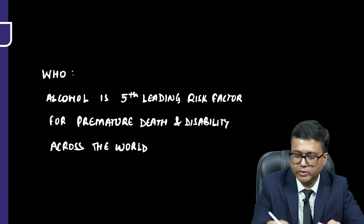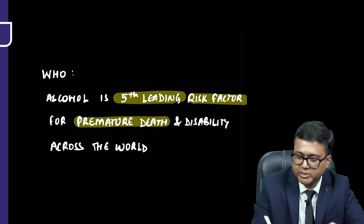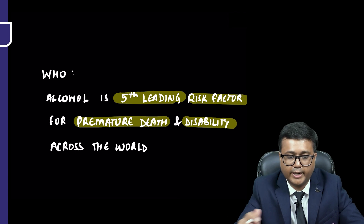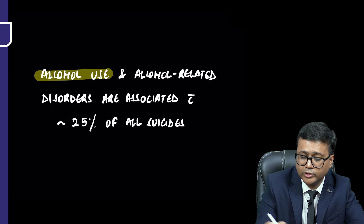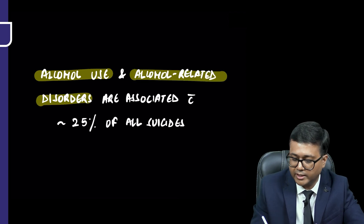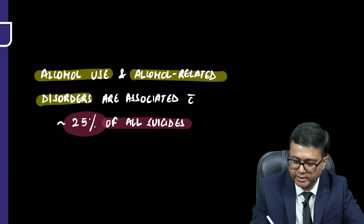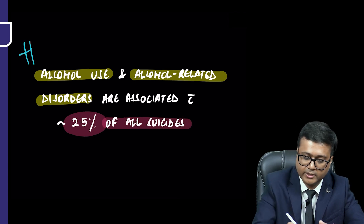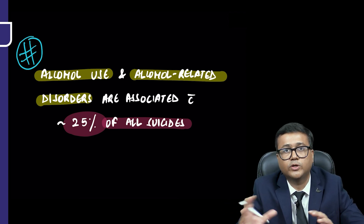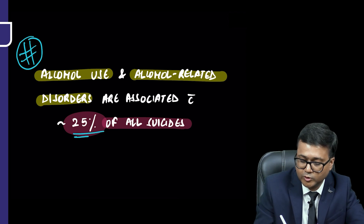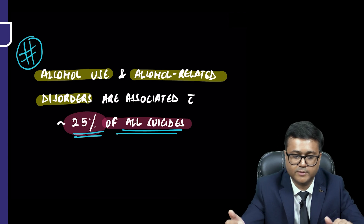According to the WHO, alcohol is the fifth leading risk factor for premature death and disability across the world. In terms of suicide, alcohol use and alcohol-related disorders are associated with around 25% of all suicides. This is very important data, especially for entrance exams — 25% of all suicides are associated with alcohol use or alcohol-related disorders.